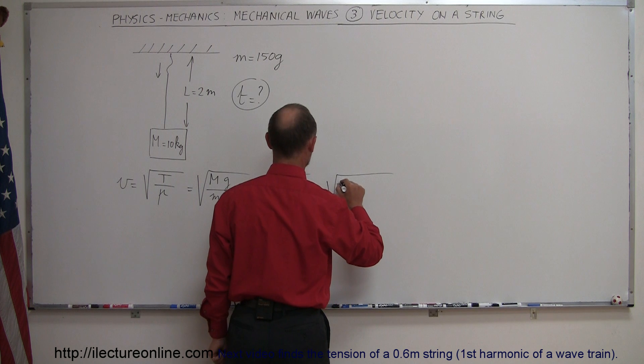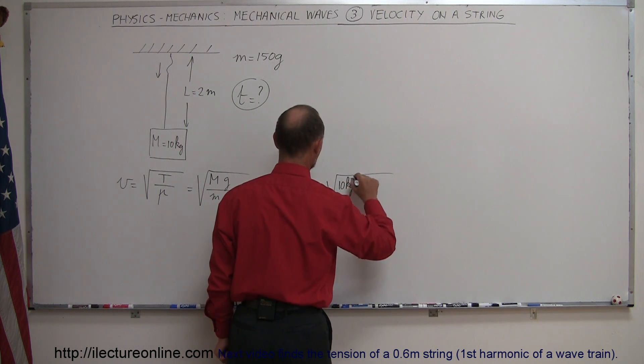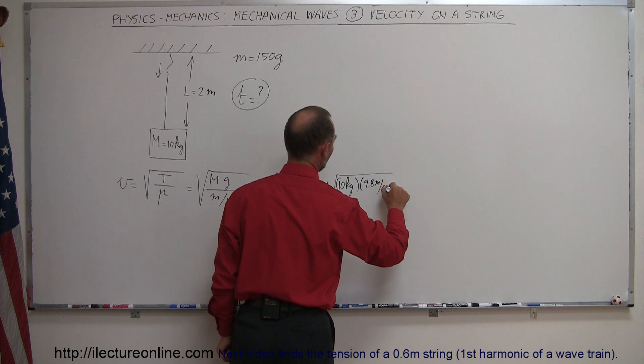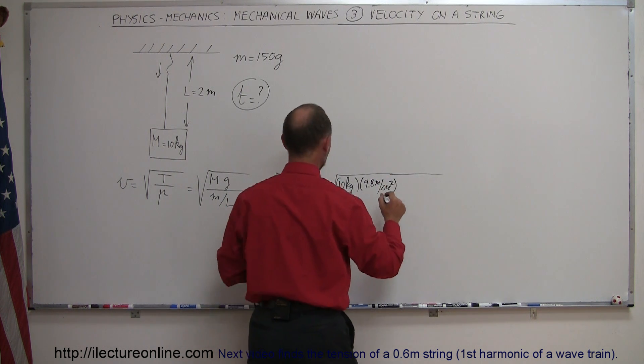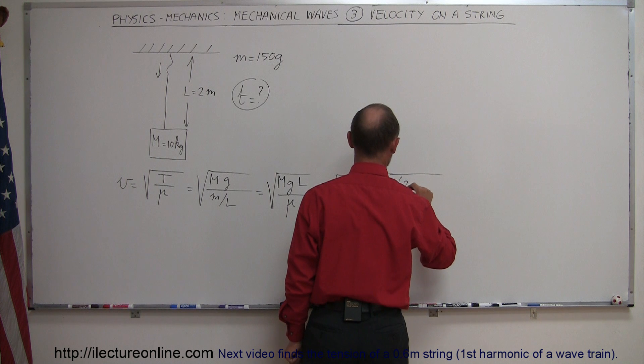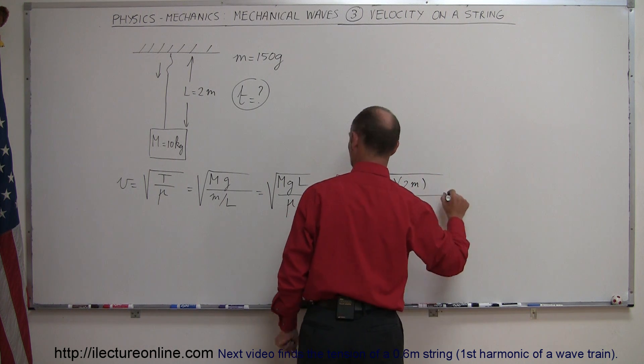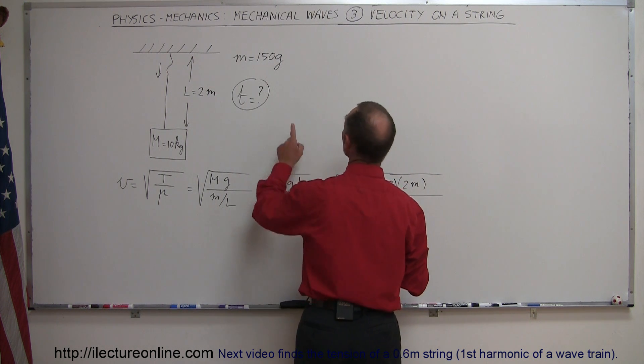The square root of 10 kilograms times 9.8 meters per second squared times the length, which is 2 meters, all divided by m, and m is...